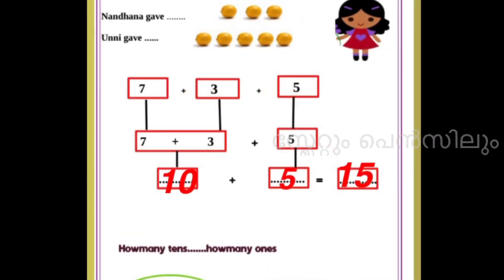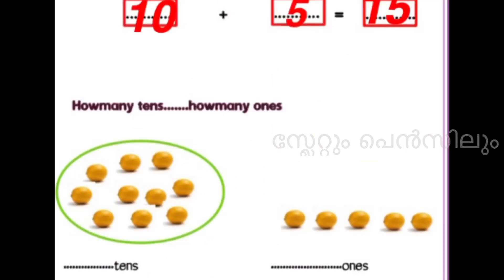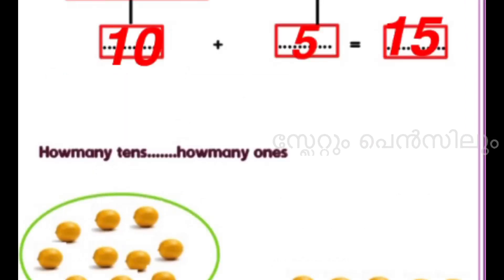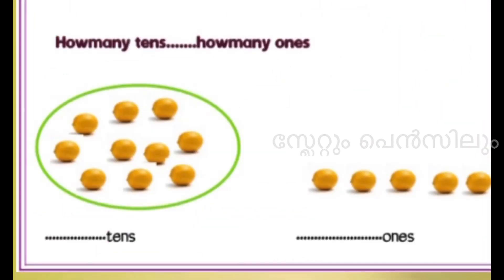We can write: 7 plus 3 is 10, then 10 plus 5 is 15. Let us check how many tens and how many ones are in 15. Here, there is 1 group of 10, that is 1 ten. Then 1, 2, 3, 4, 5 — that is 5 ones. So we can write 1 ten plus 5 ones.